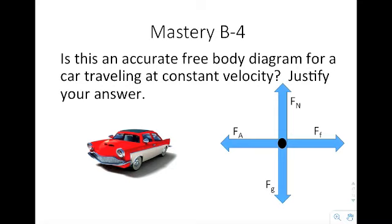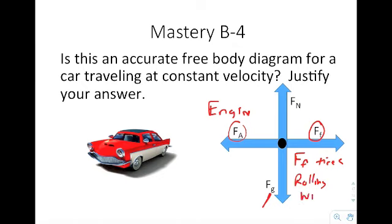Is this an accurate free body diagram for a car traveling at constant velocity? You have to look at this and ask whether these are all the forces acting on the car. For the most part, this won't capture everything — there are more forces than just one frictional force. There's also an applied force from the engine, weight (gravitational force), normal force, friction from the tires, rolling friction, and wind. Although this would be a good representation, it's not entirely accurate because there are more than four forces acting on the object.